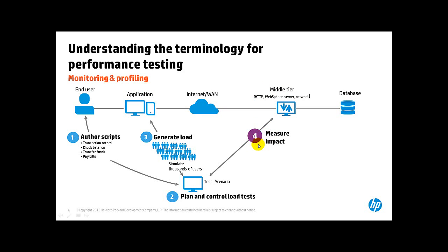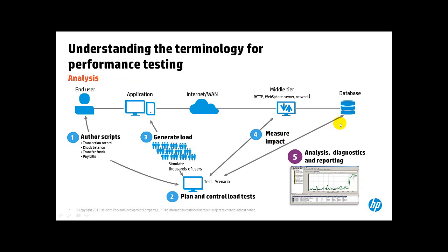The next step is when you finish your test and you have a report with all the analysis and reporting with all the root causes of issues found throughout the performance testing. With that particular report, you can define the risk of moving your application to production. In HP LoadRunner, we call this Analysis.